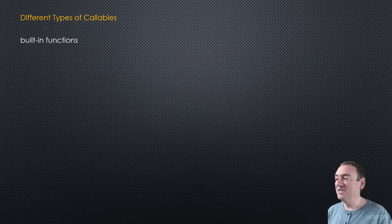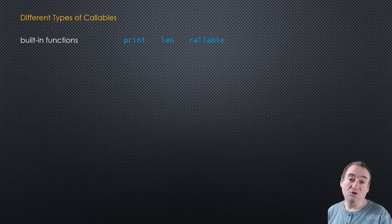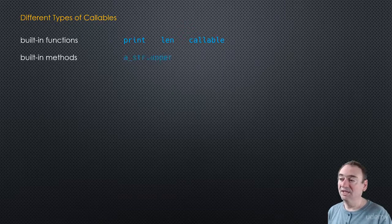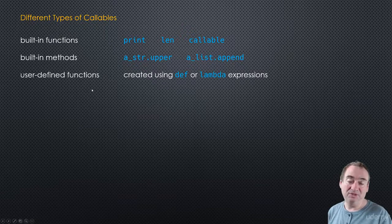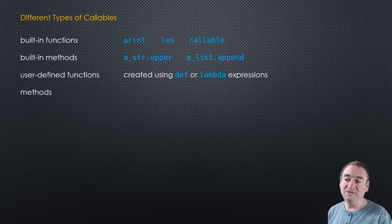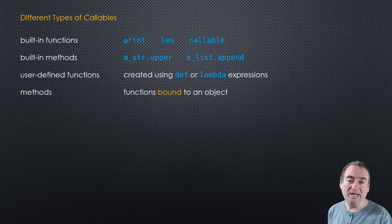So let's see what different types of callables can be. Built-in functions like print, len, and callable - all these are callables, just regular built-in functions. Built-in methods like string.upper or an append method on a list. Then you have user-defined functions - things that we define using def and lambda expressions. These are all callables as well. Our own methods in classes, things bound to an object - either bound to an instance or bound to a class - those are also callables, but they're called methods.